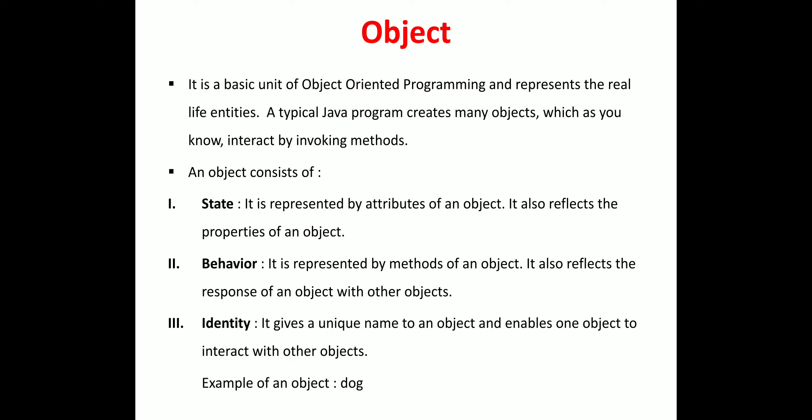The second component is behaviour. Behaviour is represented by the methods of the object and reflects the responses of an object when interacting with other objects. For example, the behaviour of a pen is that we can write with it. Writing is both the property and behaviour of the object pen.